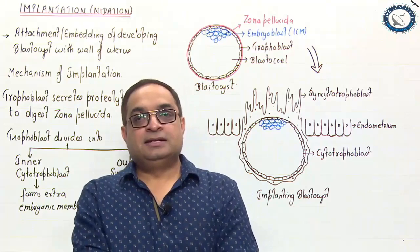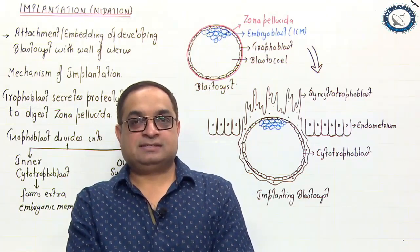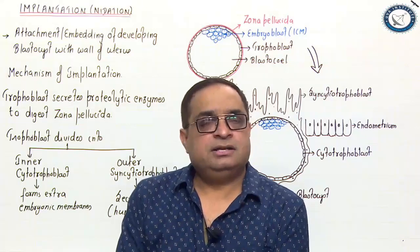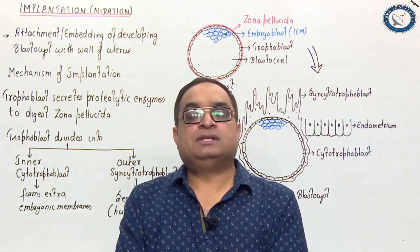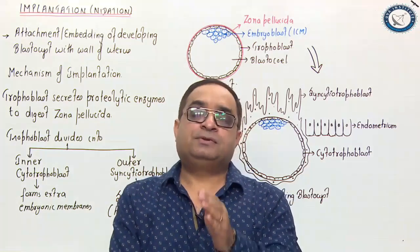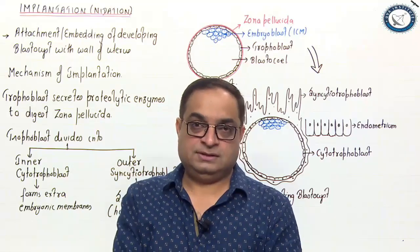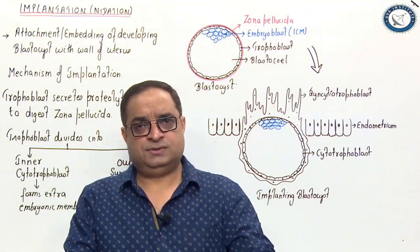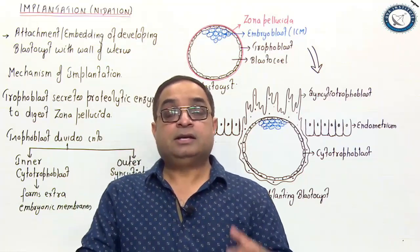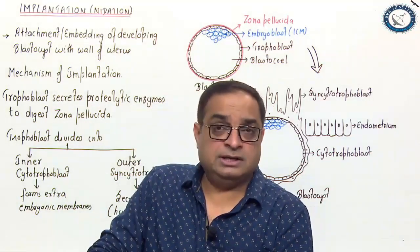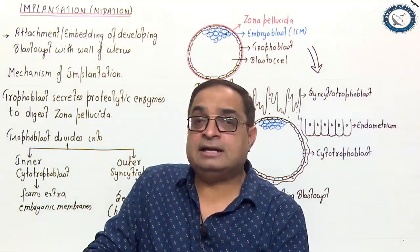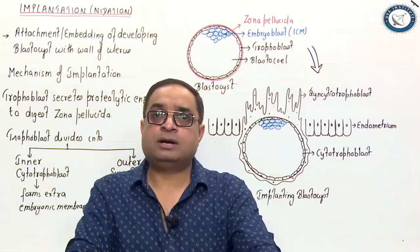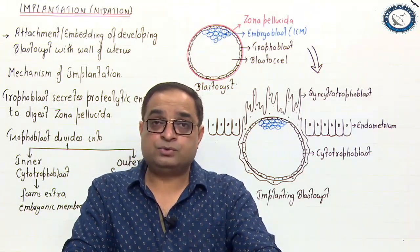Hello students, today the topic we will be discussing is implantation, which is also called cnidation. Till now we have understood that fertilization happens in the ampulla of the fallopian tube, and then after fertilization the zygote starts undergoing cleavage divisions. The dividing zygote keeps moving towards the uterus, taking nearly 4 days to reach there. In the uterus it floats for nearly 3 days, absorbs nutritive substances, and then attaches with the wall of the uterus. That process of attachment or embedding of the blastocyst with the wall of the uterus is called implantation.